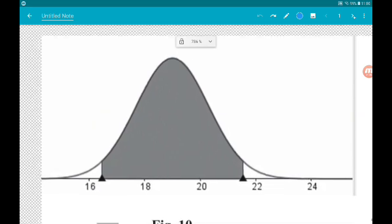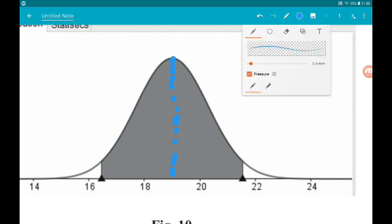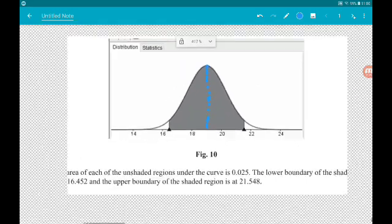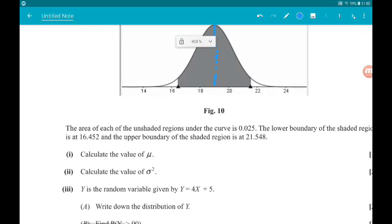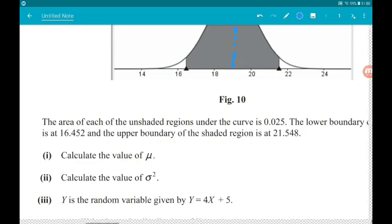So μ is the mean of the distribution. 16.452 and 21.548. So μ is the midpoint of 16.452 and 21.548.